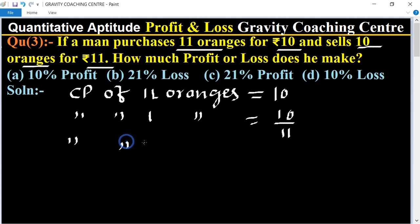Cost price of 110 oranges equals 10 upon 11 multiply 110. So 11 tens of 100 equal to 100. So it is the CP of 110 oranges.